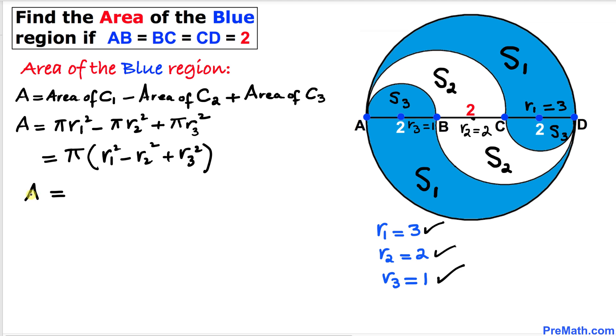The total blue shaded area equals π times R1, which is 3. This becomes 3² minus R2, which is 2², plus R3, which is 1².